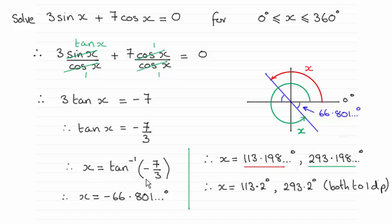So when you take the inverse tan of minus 7 thirds on your calculator make sure you're in degrees mode. You should find the calculator then gives you minus 66.801 and so on degrees.